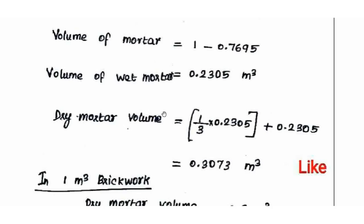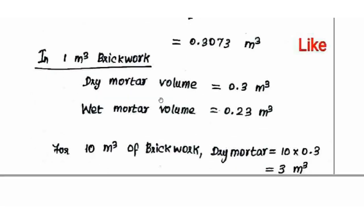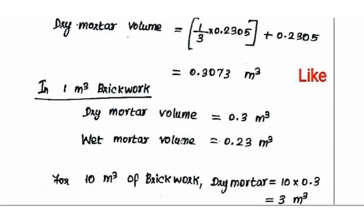In dry mortar, we compact the sand and the level will sink — the dry mortar volume undergoes shrinkage. The sand will sink and the voids will reduce. Comparing 25% of voids, we calculate 33% of the voids. So multiplying by 33%, the wet mortar volume is 0.2305 m³ and the dry mortar volume is 0.3073 m³. In practice, dry mortar volume is taken as 0.3 m³ and wet mortar volume as 0.23 m³.